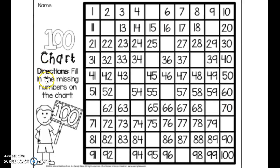Okay, great. For this activity, the directions say 100 chart, fill in the missing numbers on the chart. So we're going to use our pencil and we're going to point and count, and when we get to a blank spot we're going to write the number that needs to go there.